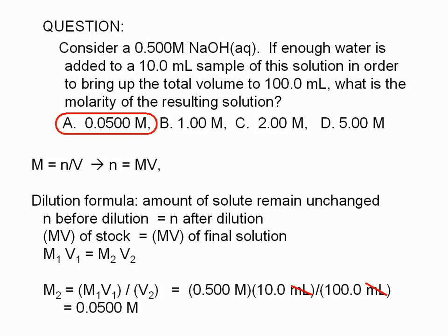Note that the final molarity, 0.0500, is one-tenth of the original. We say that we did a 1 to 10 dilution. What we have done is increase the volume tenfold, from 10 milliliters to 100 milliliters. As a result, the concentration went down tenfold.